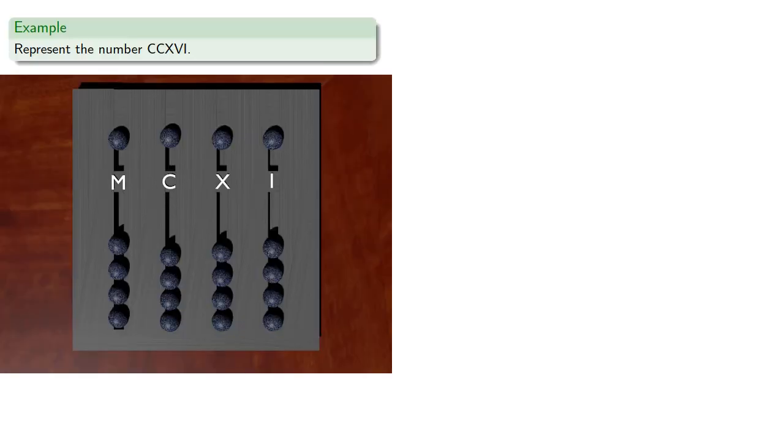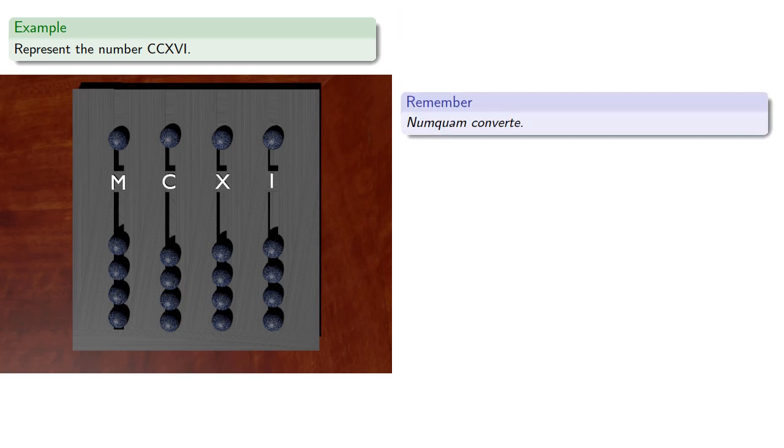So let's try to represent the number, and an important idea: numquam converte. In other words, avoid the temptation to try and read what the value of this number is. It is CCXVI, so we want two C's, so we'll push two pebbles in the C column towards the center.